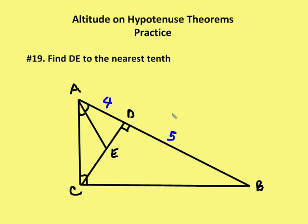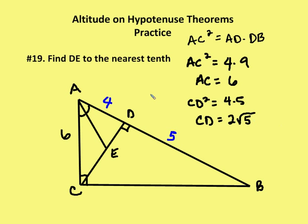Let's take a look at the first problem. We need to find the length DE to the nearest tenth, so we're going to define DE as the value of x. We're going to use our altitude and hypotenuse theorem to figure out what AC is first. AC squared is equal to AD times AB — so AC squared equals four times nine, giving us AC squared equal to 36, and AC equal to six.